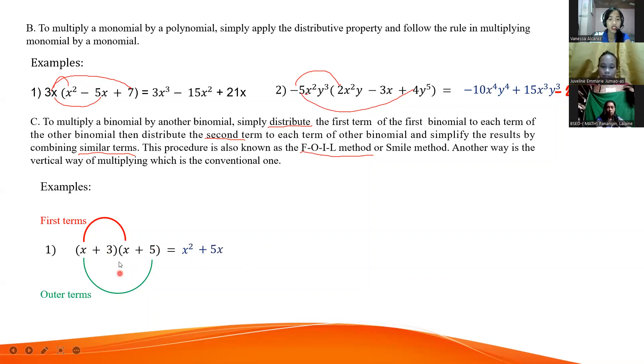Next, the inner term. Inner means inside. What are they? Very good, 3 and x. What's the answer? Very good, 3x. Our last term - you're really paying attention. Very good, 3 and 5. The answer is 15.